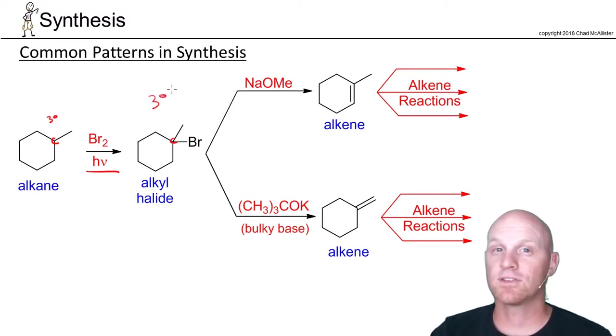With a tertiary halide, we can't do SN2, but we can do E2. And the big key here, big point for synthesis, is we have two different ways of accomplishing that E2. We can use a non-bulky base like sodium methoxide or sodium hydroxide, or we can use our bulky base, and we'll see a difference in whether we get the Zaitsev or the Hoffman product.